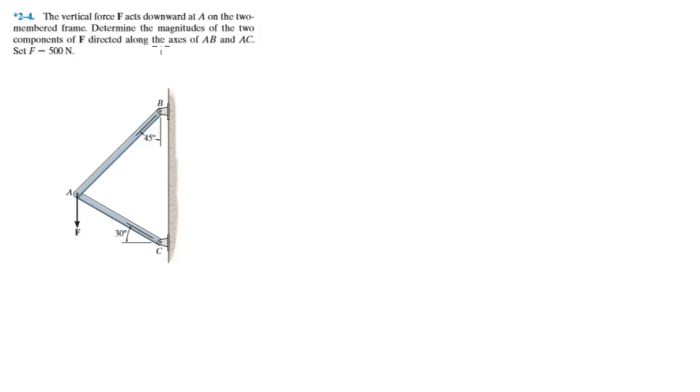Alright guys, now we're going to do problem 2-4, which asks: the vertical force F acts downward at A on the two-membered frame. Determine the magnitudes of the two components of F directed along the axes AB and AC. So basically they're asking you for this force and this force.